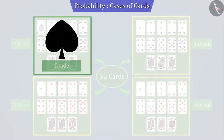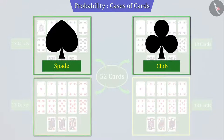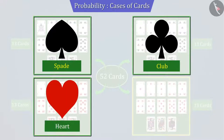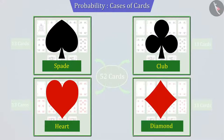The first suit consists of spades. The second suit is clubs. The third suit is hearts. And the fourth suit is diamonds.